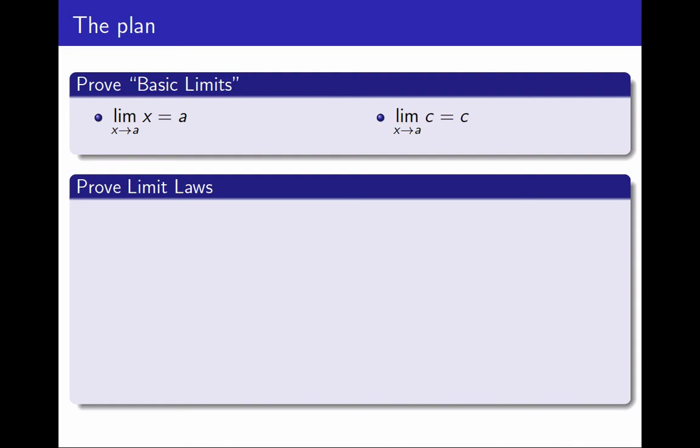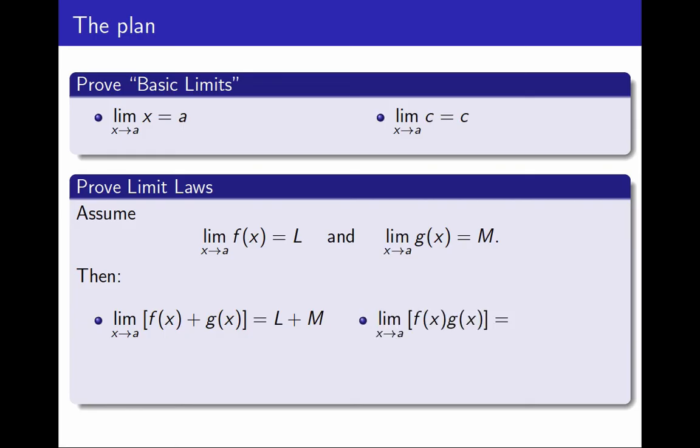Specifically, the limit laws tell me that if I have two functions f and g, and I assume they have a limit at the same point a, the limit of f is L and the limit of g is M, then the sum must also have a limit. It will be the sum, L plus M. And similarly, the product must also have a limit. It will be the product, L times M.